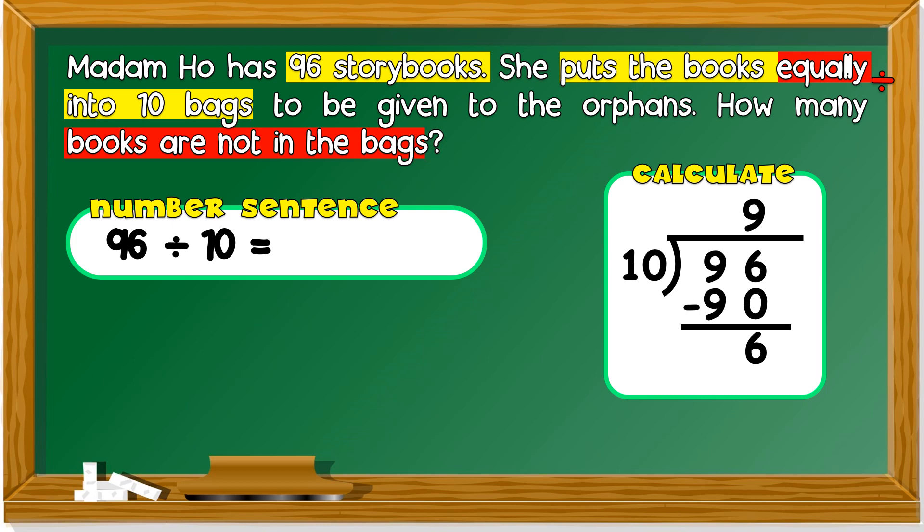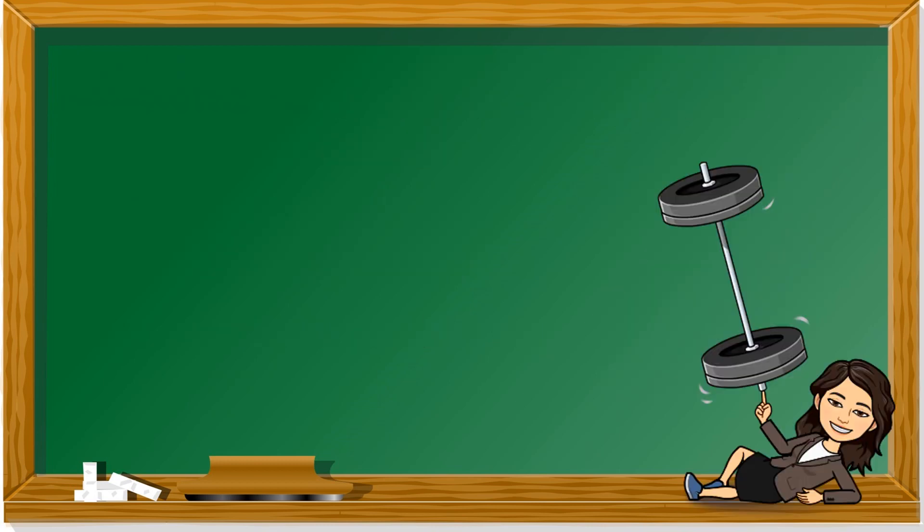The number sentence, let's complete it, is 9 with remainder of 6. How many books are not in the bag? There are six books that are not in the bags. We can't divide six with ten. If we put the six books into the bags, then it would not be divided equally. That's it for today's lesson.